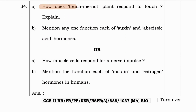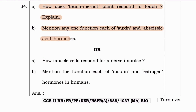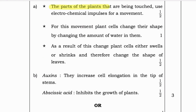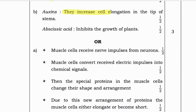Next question: How does the touch-me-not plant respond to touch? Mention one function each of auxins and abscisic acid hormones. The parts of the plant that are touched use electrochemical impulses for movement. Plant cells change their shape by changing the amount of water in them — as a result, cells either swell or shrink and change the shape of the leaves. Auxins increase elongation at the tip of the stems; abscisic acid inhibits the growth of plants.